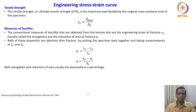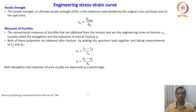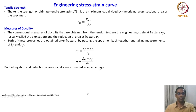Both of these properties are obtained after fracture by putting the specimen back together and taking measurements of L_F and A_F. L_F is the final length after fracture; A_F is the area after fracture. E_F is given by the formula (L_F minus L_naught) divided by L_naught, which is elongation. The reduction in area Q is (A_naught minus A_F) divided by A_naught. Both elongation and reduction in area are usually expressed as percentages.